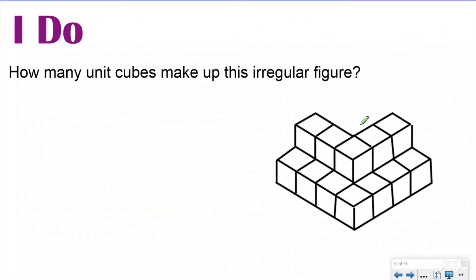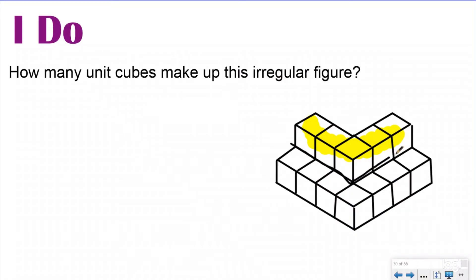Here's one that could be tricky. The question says: how many unit cubes make up this irregular figure? I'm going to break it apart into layers. I'll take the top layer and figure out the volume of that first. This top layer has one, two, three, four, five cubic units that make it up.